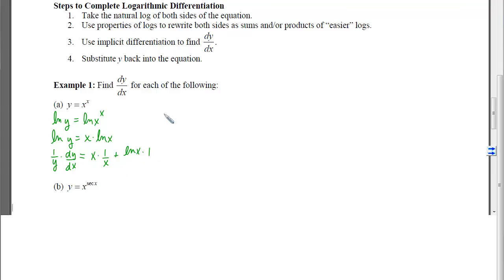If I want to isolate dy/dx, I'm going to multiply both sides by y. And then my final step is to replace y with what it equals. Remember, y was x to the x, so I can substitute that back in. And I am done.